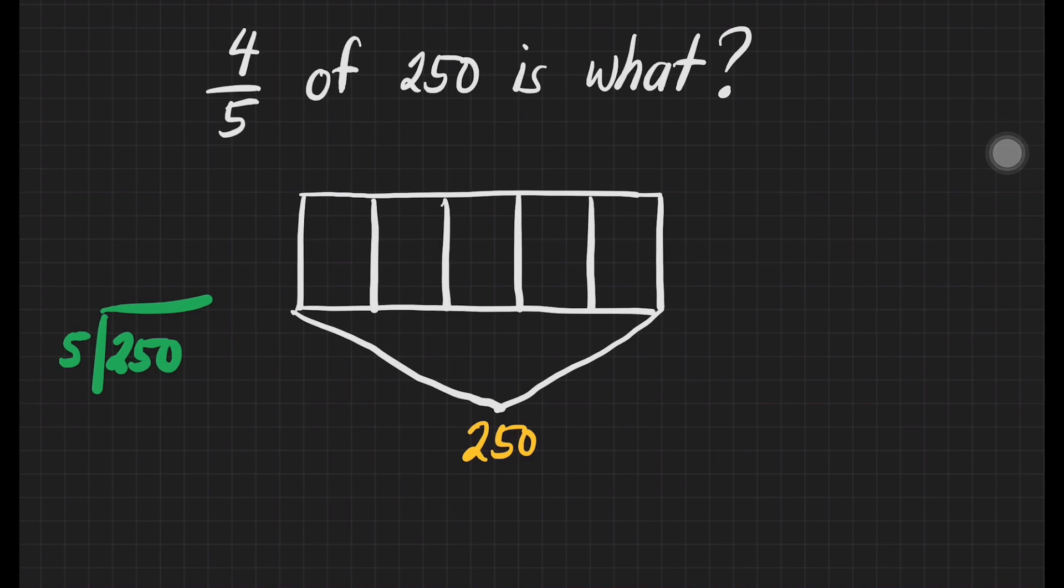We will just divide 250 by 5. How many 5s are there in 25? That's 5 times 5 is equal to 25. 25 minus 25 is 0. Bring down 0. How many 5s are there in 0? That's 0. 0 times 5 is equal to 0. Then, subtract will have 0. So in each box, we'll have 50.